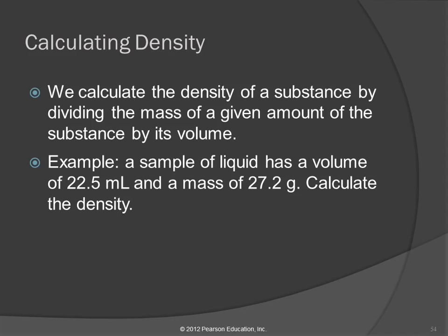We're going to learn how to do calculations with density. The equation you should know: density equals the mass of the object divided by its volume. We calculate density by taking the mass and dividing by the volume. For example: a liquid has a volume of 22.5 milliliters and a mass of 27.2 grams — calculate the density.